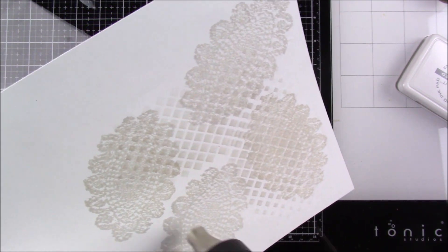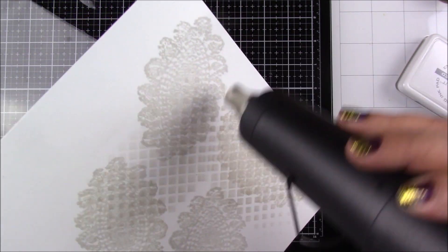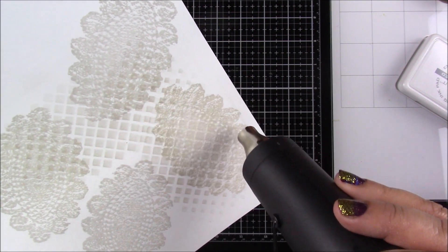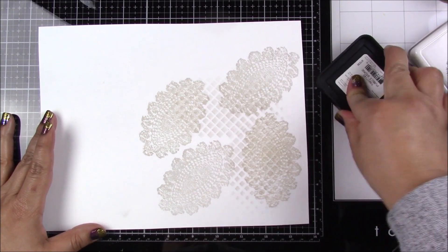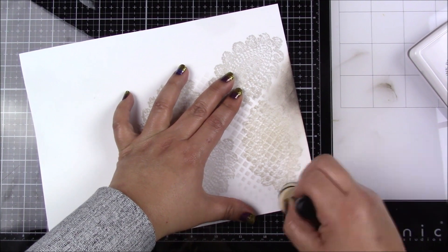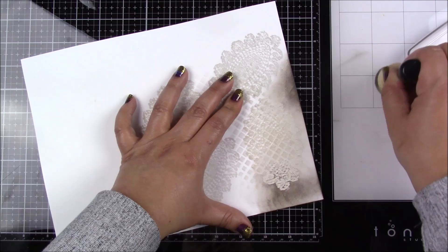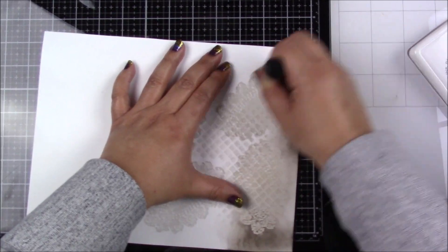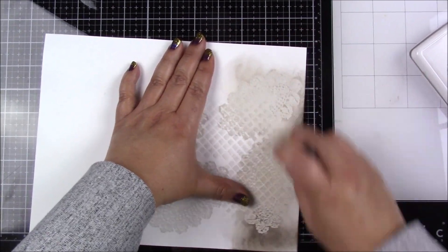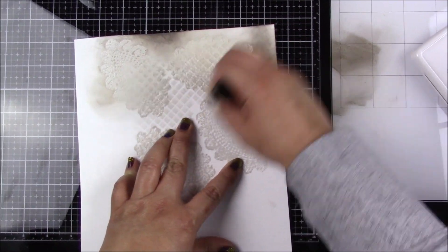After applying the clear embossing powder, I apply heat to melt it. I'm ready for the next step, which is to add some distress ink with a blender. I'm using pumice stone ink once again, and I love how as soon as you start putting the ink around the embossed area, the crochet image starts popping up. It's an amazing image—they did a great job with the stamp set.